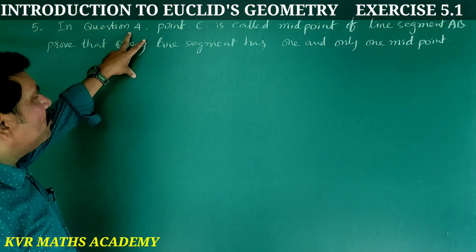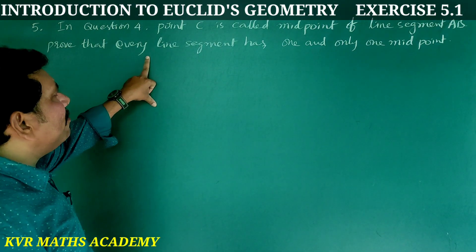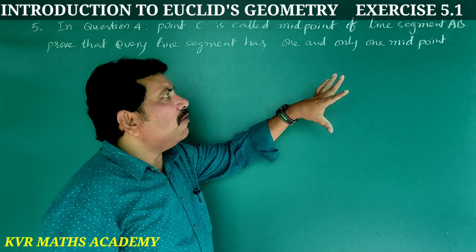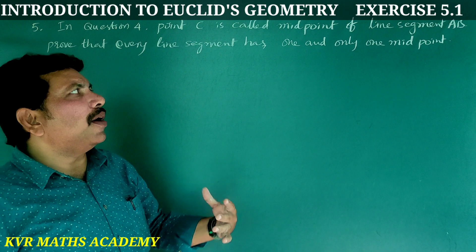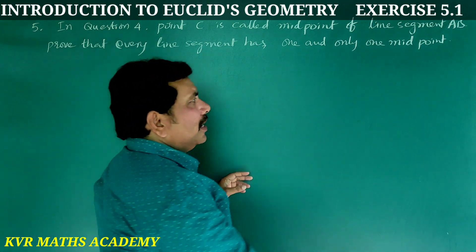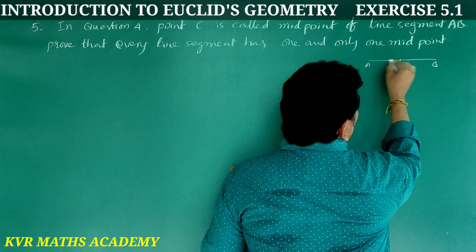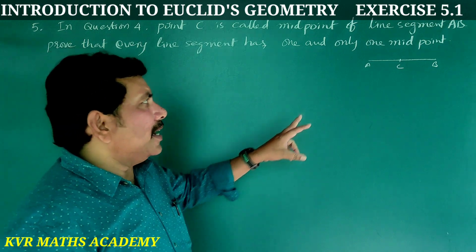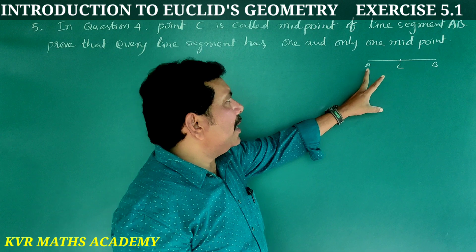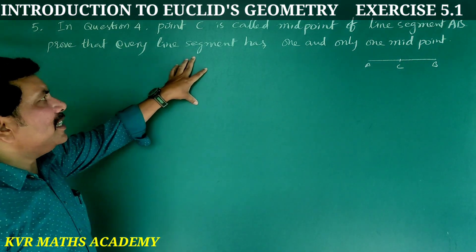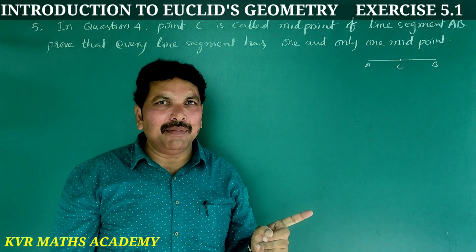Fifth question: In question number 4, point C is called the midpoint of line segment AB. Prove that every line segment has one and only one midpoint.